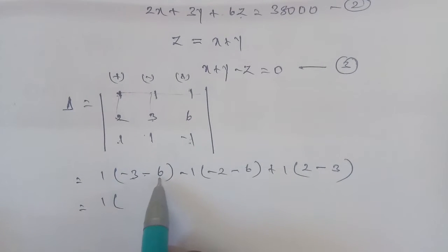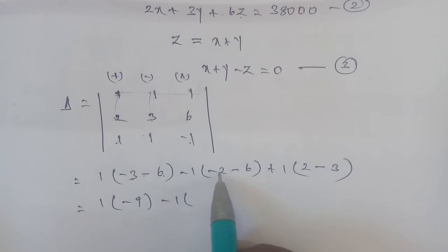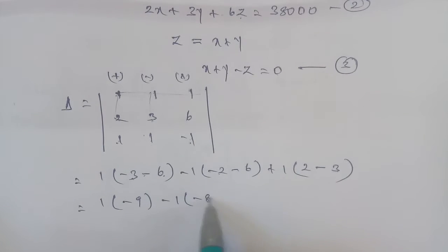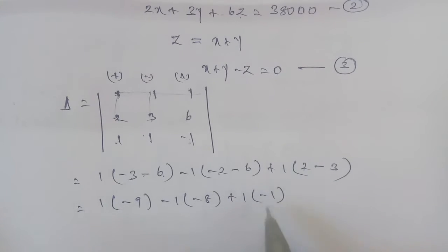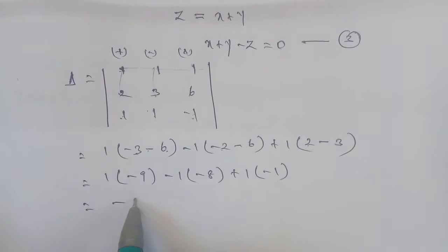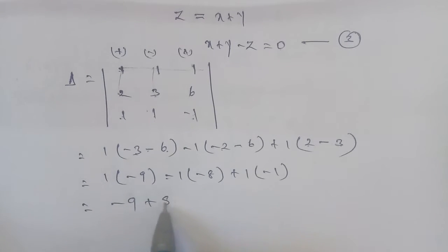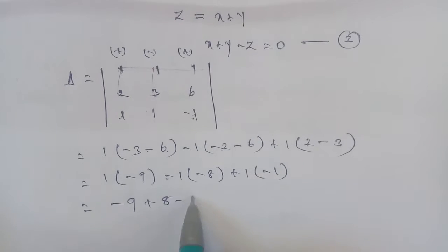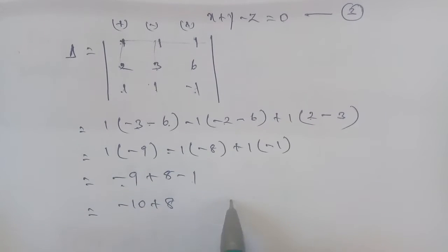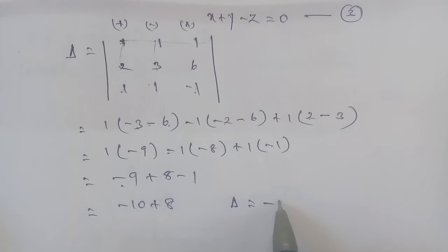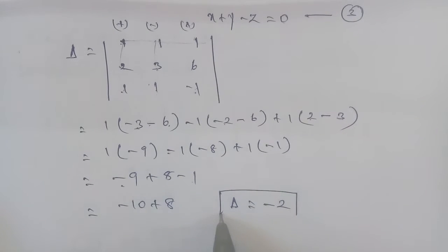So delta equals 1 times (minus 3 minus 6), minus 1 times (minus 2 minus 6), plus 1 times (minus 1 minus 3). That gives: 1 times minus 9, minus 1 times minus 8, plus 1 times minus 1. So: minus 9 plus 8 minus 1. Delta equals minus 10 plus 8, which is minus 2. Since delta is not equal to 0, we proceed with Cramer's rule.